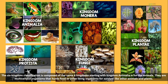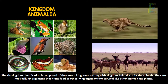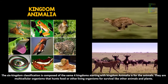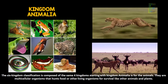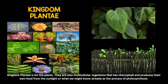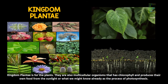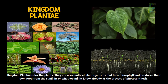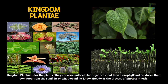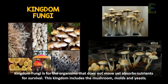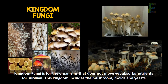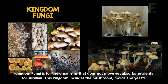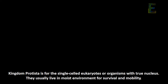The six-kingdom classification is composed of the same four kingdoms. Kingdom Animalia is for animals — multicellular organisms that consume food from other living organisms for survival, like other animals and plants. Kingdom Plantae is for plants — multicellular organisms that have chlorophyll and produce their own food from sunlight through the process of photosynthesis. Kingdom Fungi is for organisms that do not move yet absorb nutrients for survival, including mushrooms, molds, and yeasts. Kingdom Protista is for single-celled eukaryotes, or organisms with a true nucleus.